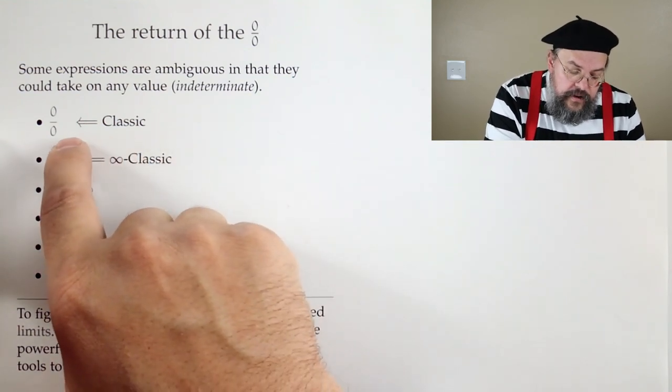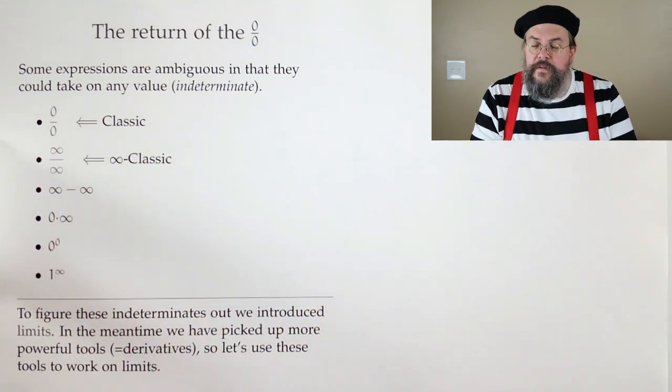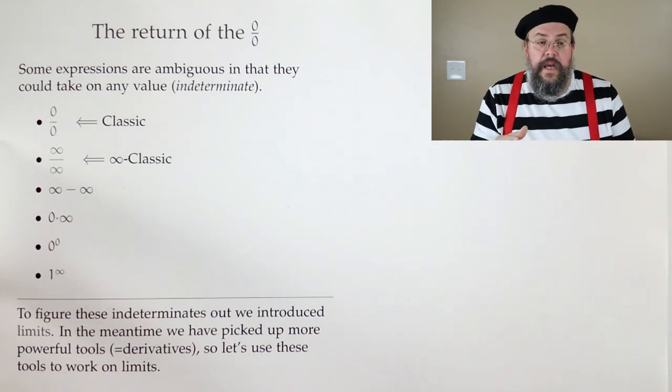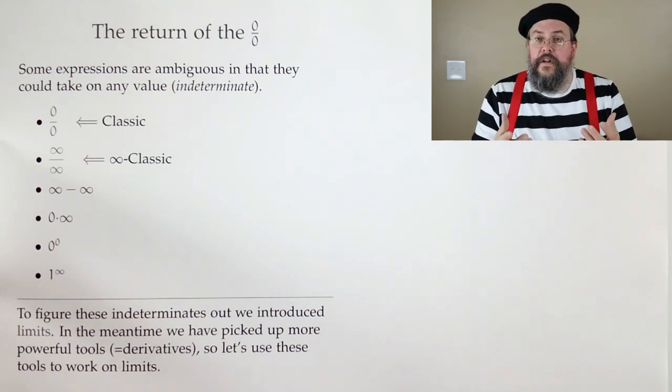The classic form is 0 over 0. And we spent some time saying, well, what is 0 over 0? And the answer is, it can be anything. And that's why it's indeterminate. It's this ambiguous thing.